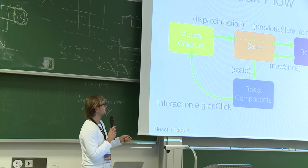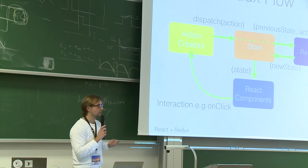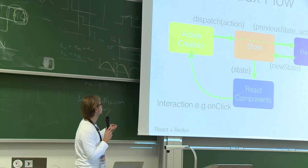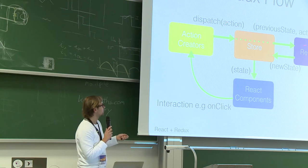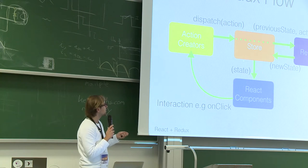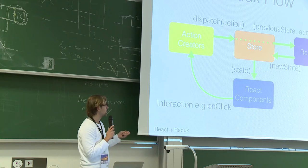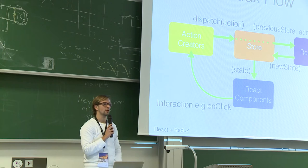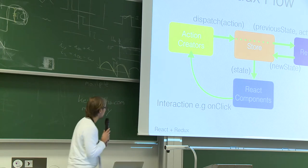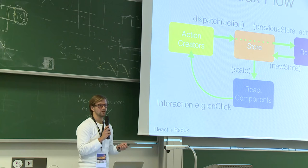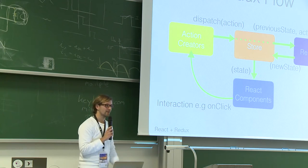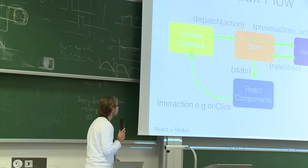If you actually made a change — say somebody clicked to add a to-do — your action creator creates the action, it gets dispatched, the reducer changes the state from the list of to-dos, and you have a new state with the new to-do in it, which reflects in the UI.